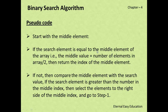If the search element is equal to the middle element of the array, the middle value is equal to the total number of elements in the array divided by 2. Then we return the index of the middle element. If the element is found at the middle, return the index of the middle value.